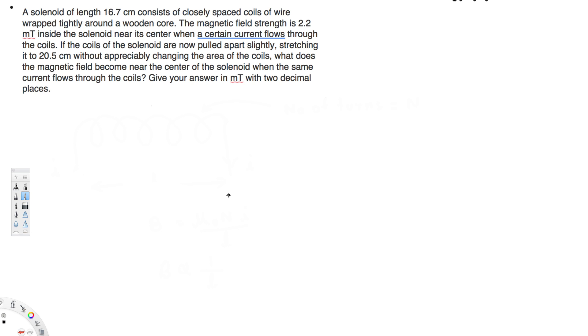What's going on guys, let's look at this problem right here. This question is asking: a solenoid of length 16.7 centimeters consists of closely spaced coils of wire wrapped tightly around a wooden core. The magnetic field strength is 2.2 millitesla inside the solenoid near its center when a certain current flows through the coils. If the coils of the solenoid are now pulled apart slightly, stretching it to 20.5 centimeters without appreciably changing the area of the coils, what does the magnetic field become near the center of the solenoid when the same current flows through the coils?